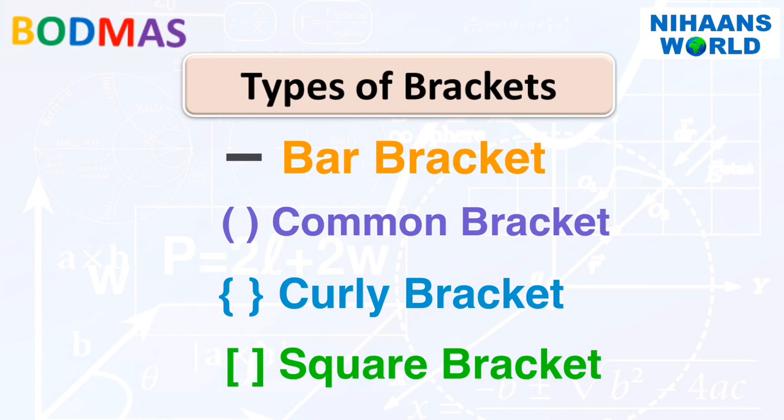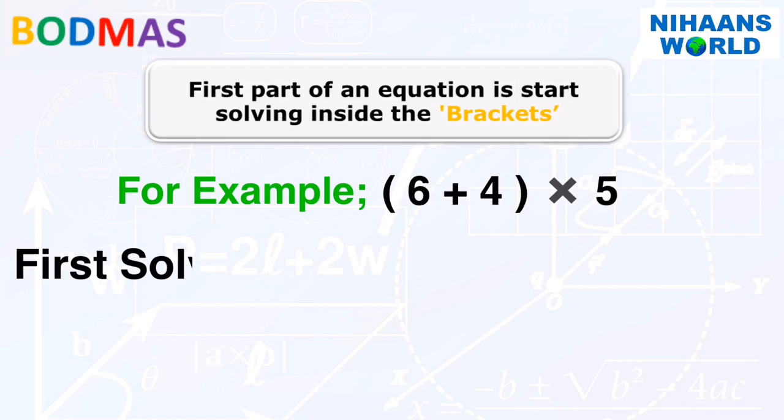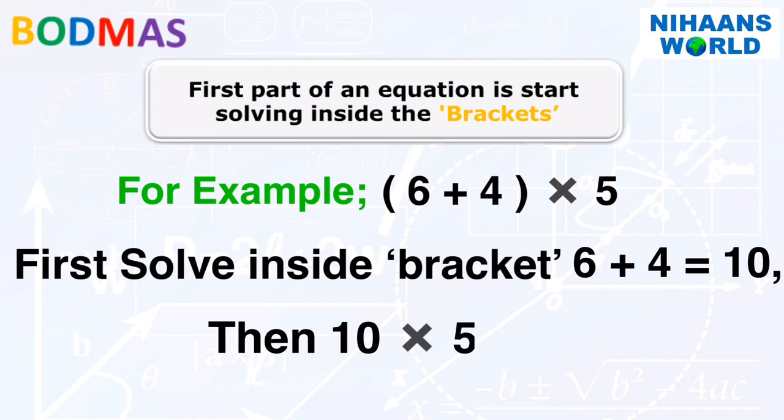First part of an equation is start solving inside the brackets. For example, (6 plus 4) multiplied by 5. First, solve inside brackets: 6 plus 4 is equal to 10. Then, 10 multiplied by 5 is equal to 50.